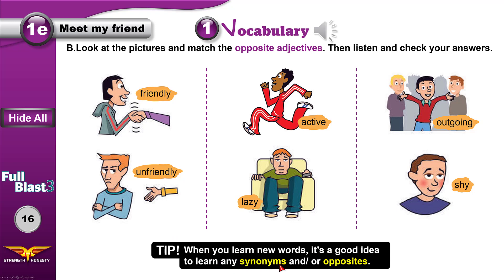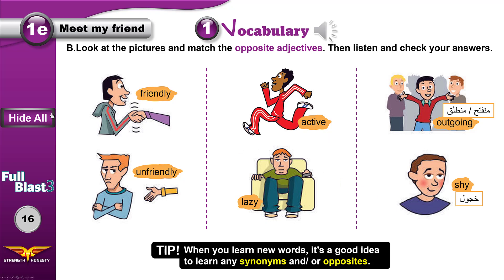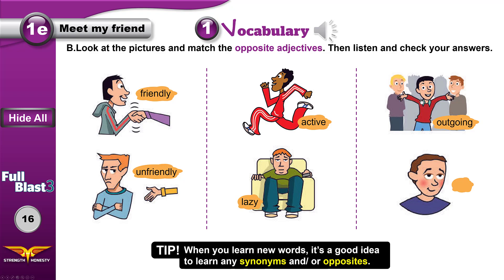Synonyms are words with the same or similar meaning; opposites are antonyms with completely different meanings. Learn friendly and unfriendly together, active and lazy together. Friendly means nice to people; unfriendly means rude to people. Active means energetic, enjoys sports and movement; lazy means someone who enjoys sitting down and doing nothing. Outgoing means someone who enjoys meeting new people; shy means nervous around people they don't know. Can you say the adjectives? Friendly, unfriendly, active, lazy, outgoing, shy.